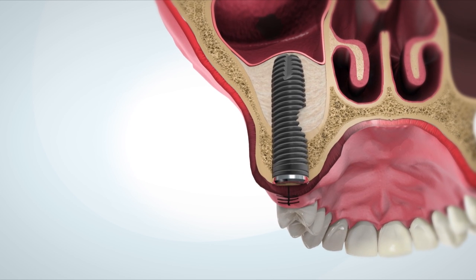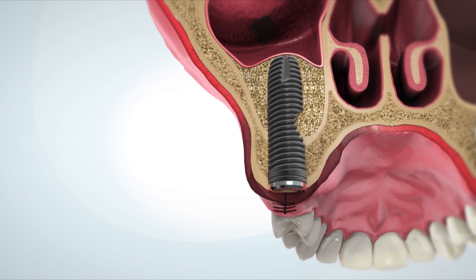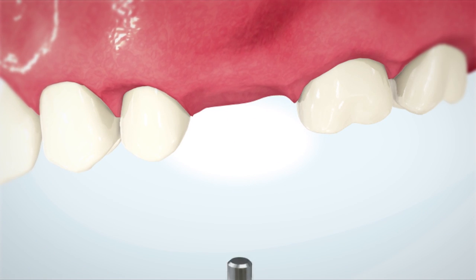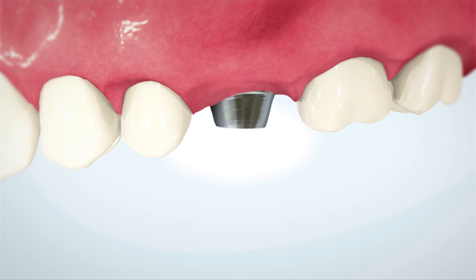Over several months, the bone graft will mature and the implant will integrate with the newly formed bone. The crown is then installed upon the implant.